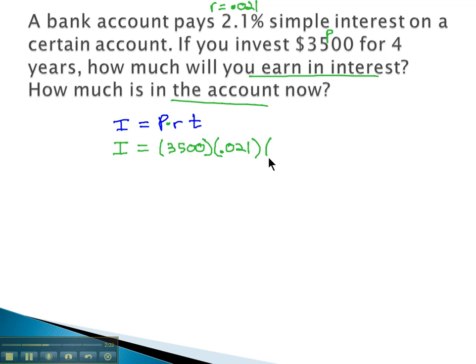Times the time. And it's really important the time is in years. Here we're told for 4 years, it's in years, so we'll multiply by 4. So the amount of interest in the account then is simply 3,500 times 0.021 times 4, which is $294.